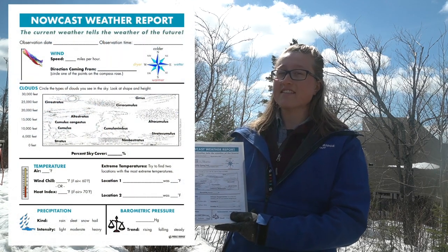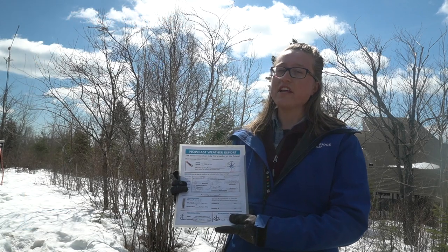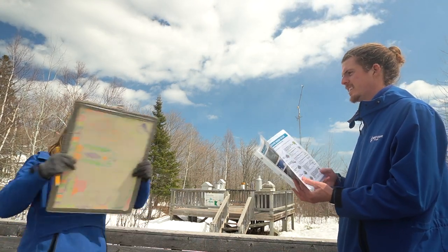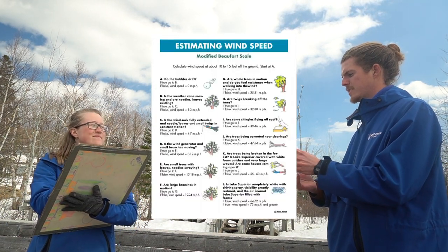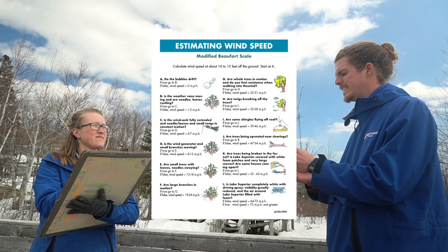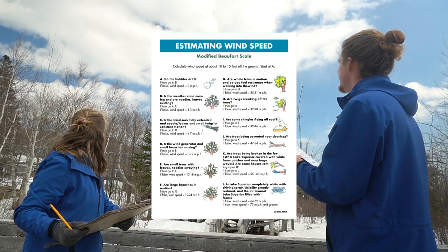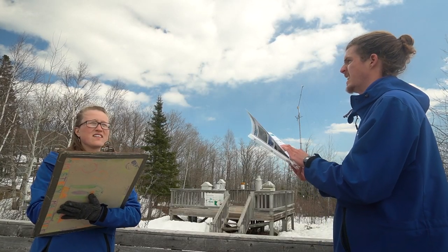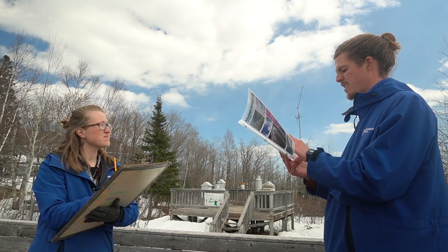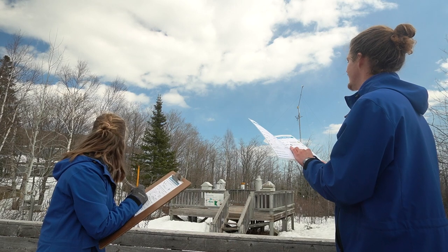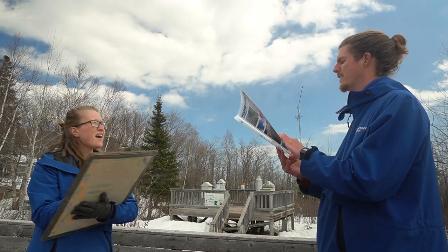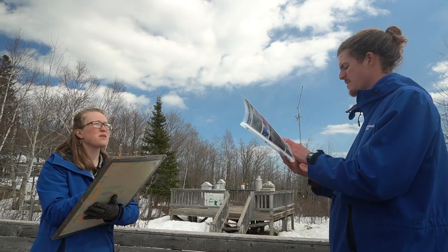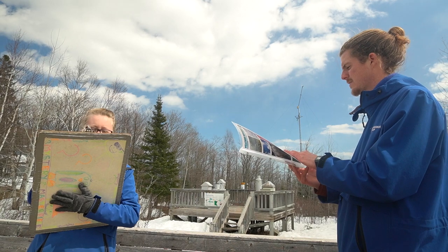Robbie and I are going to start our nowcast now — we're going outside to check what the weather is currently here at Wolf Ridge. You can do this at home too. All right Carol, let's do the nowcast. What's first? Wind speed — the Beaufort scale. Let's see, I'm on question D. Are small branches moving? Definitely. Go to E. Are small trees swaying? Yeah, definitely. Go to F. Are large branches in motion? A little bit. Go to G. Are whole trees in motion? Not quite. Okay, write down 19 to 24 miles per hour.